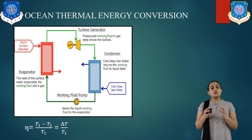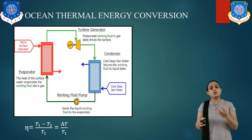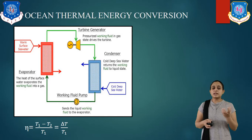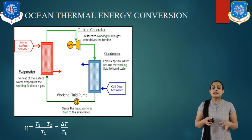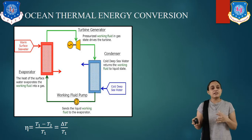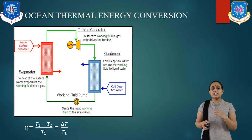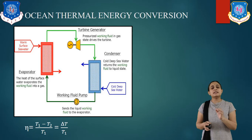T1 is defined as the temperature of warm ocean water, and T2 is the temperature of cool deep ocean water. Delta T is the temperature difference. The efficiency can be found as (T1 − T2) / T1, which equals delta T / T1. Temperature T1 ranges between 24 to 27 degrees, and temperature T2 ranges from 4 to 6 degrees.